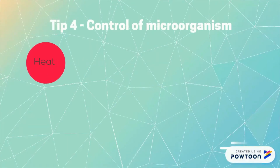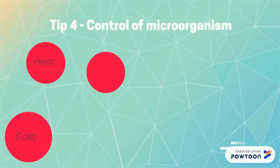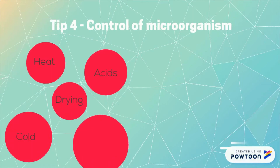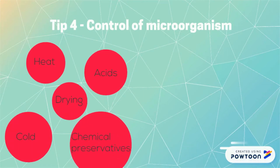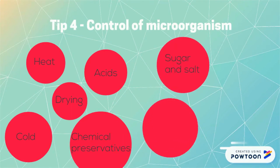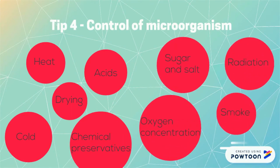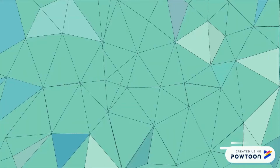Of microorganisms, what is meant by control is the factors that can influence microbial growth in food. For example: heat, cold, drying, acid, chemical preservatives, oxygen, concentration, sugar and salt, radiation, and smoke.